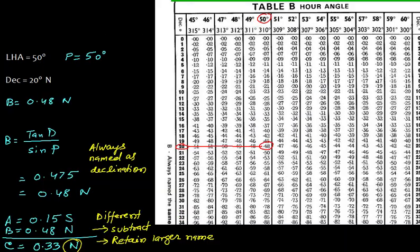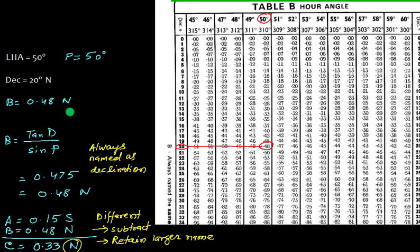Now we go to table B. LHA is 50 and declination is 20 degrees. From the table, we get the value 0.48, and B is always named the same as declination. So here the declination is north, so we name B as north. If we compute directly: B equals tan 20 degrees upon sin 50 degrees, which gives 0.475, or rounded to 0.48 north.